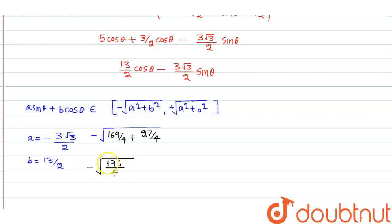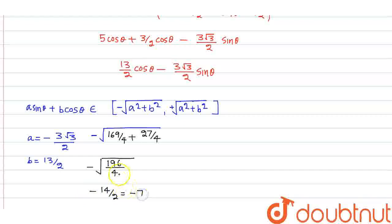196 is the square of 14, and 4 is the square of 2, so √(196/4) = 14/2 = 7. Therefore the range is minus 7 to plus 7.